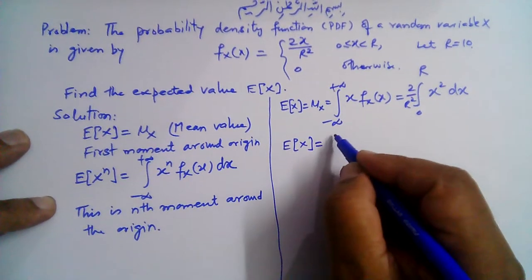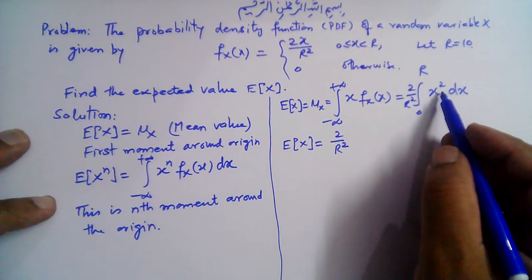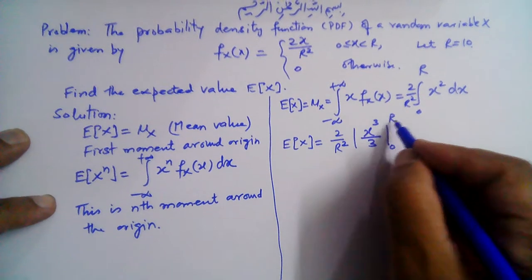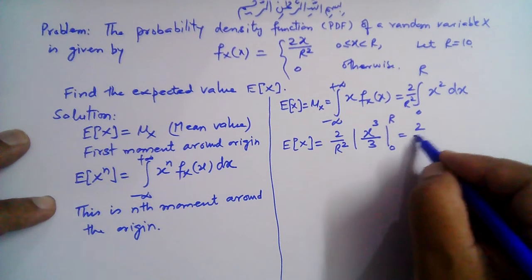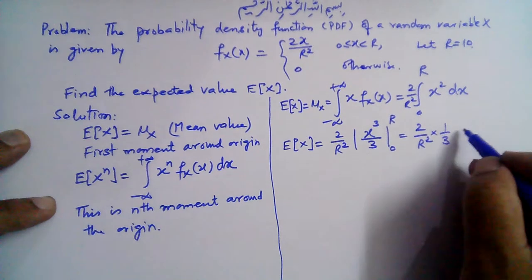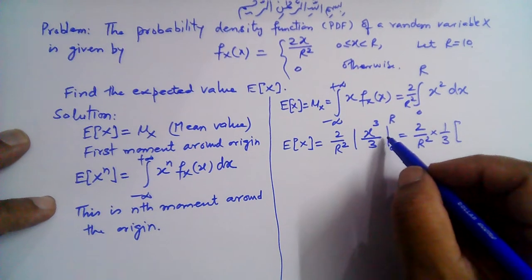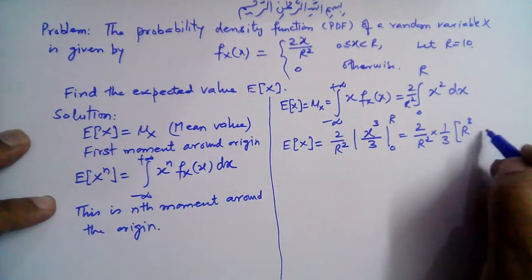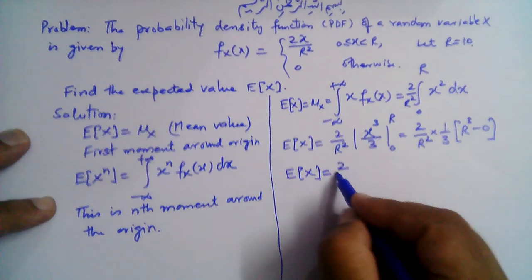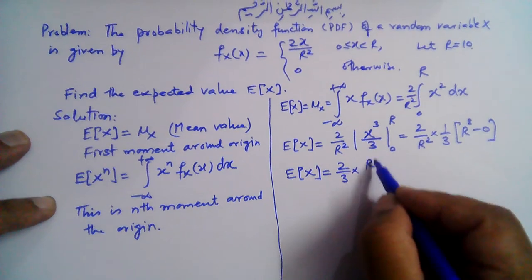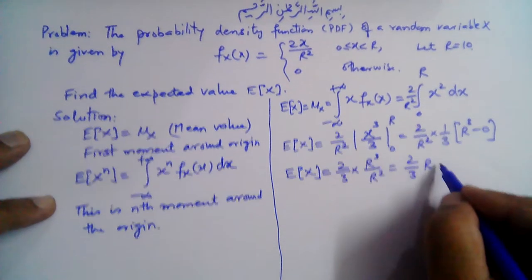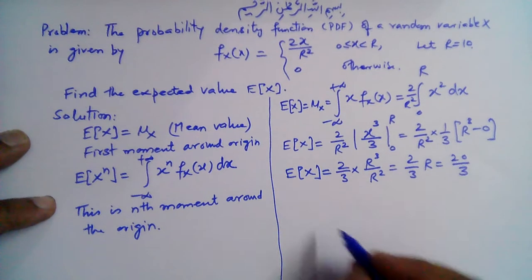The expected value of x equals 2 over r squared, and the integral of x squared gives x cubed over 3, with limits 0 to r. This becomes 2 over r squared times (1 over 3) times r cubed minus 0, so the expected value of x is 2 over 3 times r cubed over r squared, which simplifies to 2 over 3 times r. With r equal to 10, this gives 20 over 3.